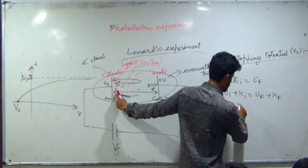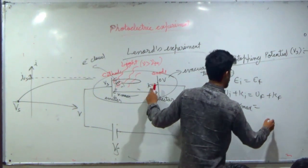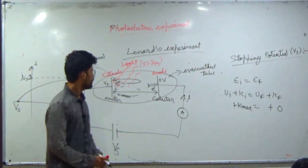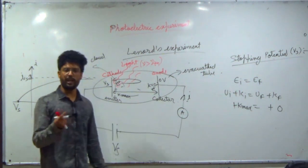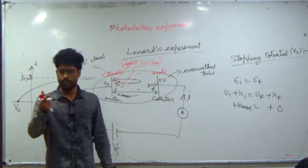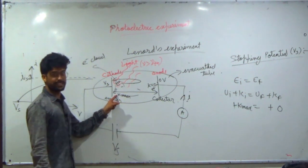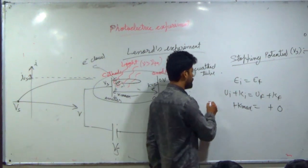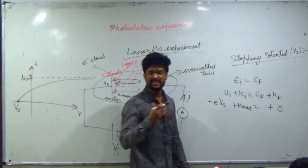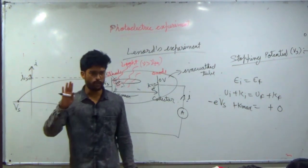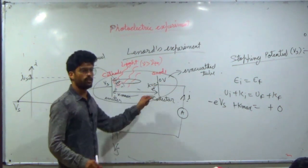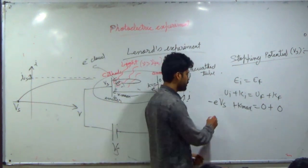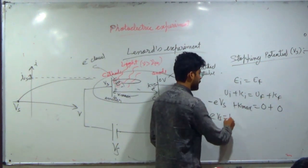Initial kinetic energy is K max; final kinetic energy is zero. For potential energy, from electrostatics, U equals Q times V. The initial potential energy is minus e times Vs, and the final potential energy is zero (since the potential there is zero). Therefore: e times Vs equals K max.